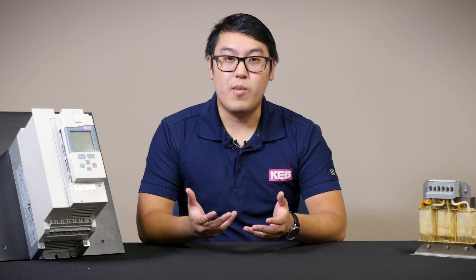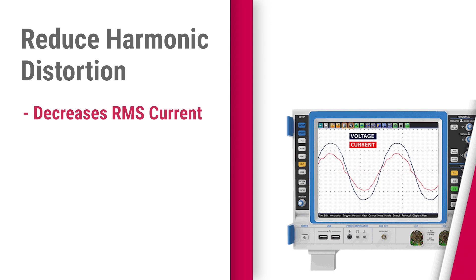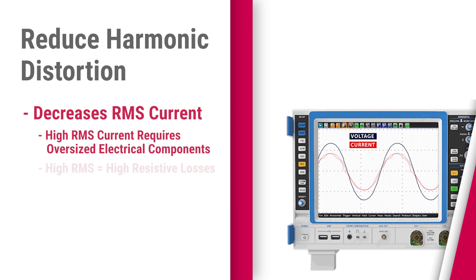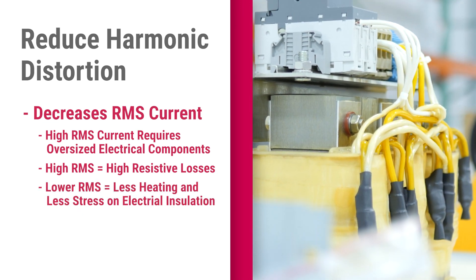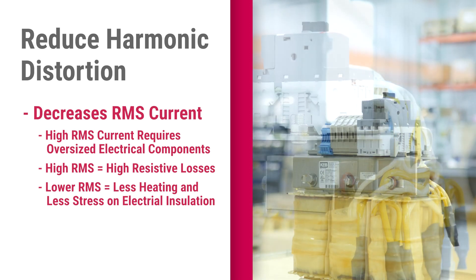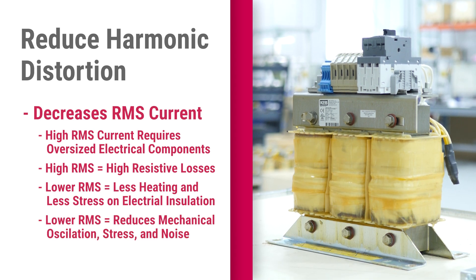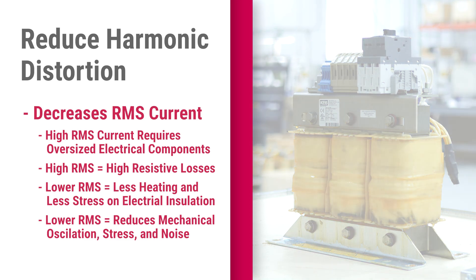Now let's talk about specifics on how our harmonic filter can reduce harmonic distortion effects. The first thing is that it decreases RMS current, which can cause oversizing of electrical components and also adds higher resistive losses. It also decreases heating on electrical components, which reduces the amount of stress put on the electrical insulation system. It also reduces mechanical oscillation in line-driven rotating components, which reduces the stress on the motor and can reduce excessive motor noise.